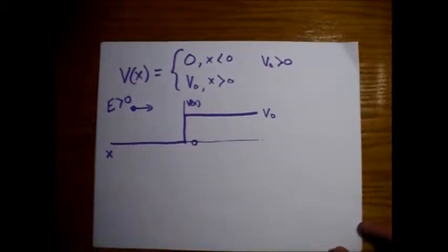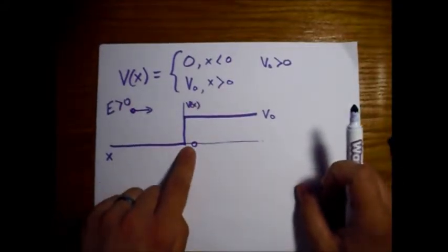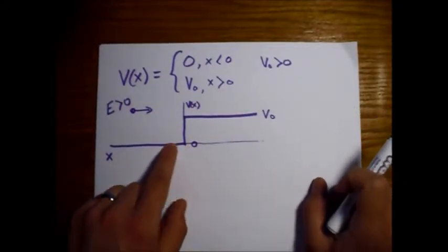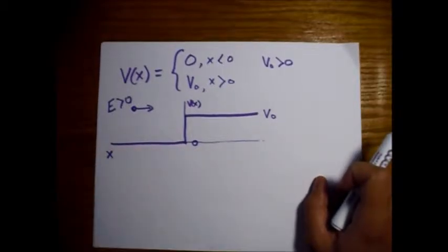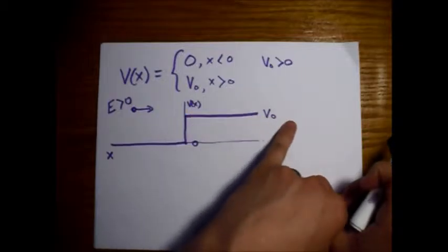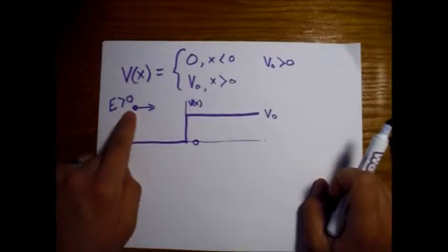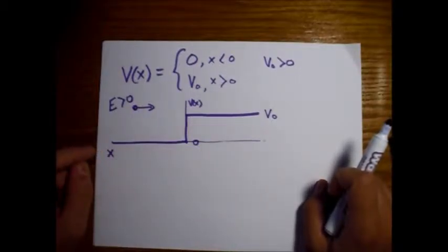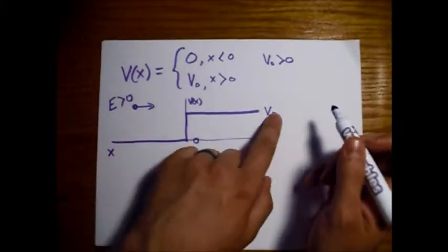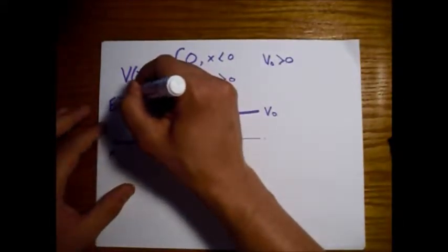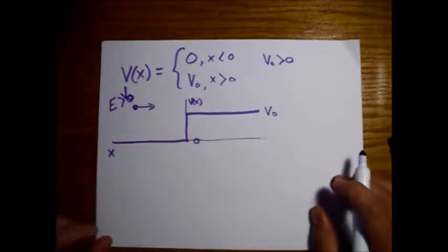What we have here is a step potential. The potential energy is zero at x less than zero, and it's V-naught at x greater than zero. We have a particle coming in from the left side, and it has an energy greater than V-naught.